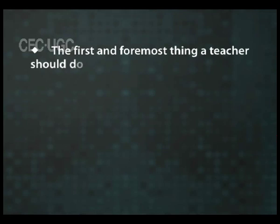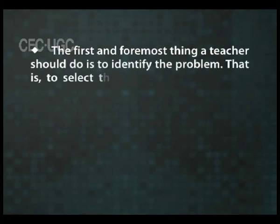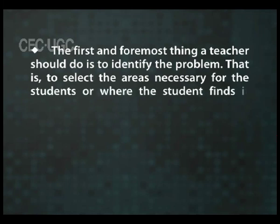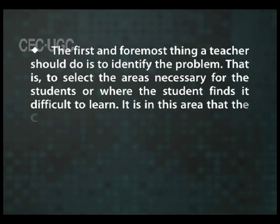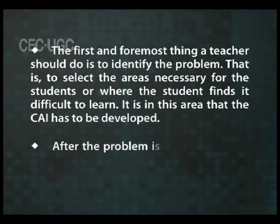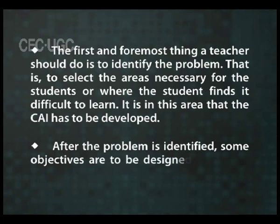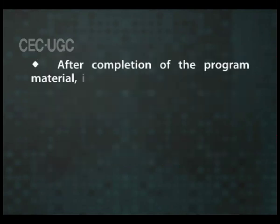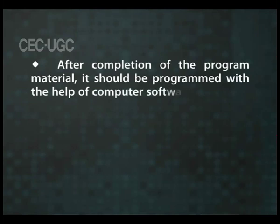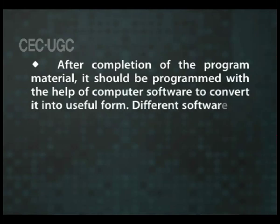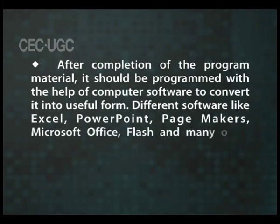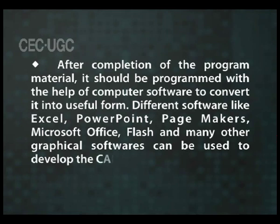Before developing a CAI, the teachers will have to do the following. The first and foremost thing a teacher should do is to identify the problem — that is, to select the areas where the students find it difficult to learn. It is in this area that the CAI has to be developed. After the problem is identified, some objectives are to be designed related to the problem. After completion of the program material, it should be programmed with the help of computer software to convert it into useful form. Different softwares like Excel, PowerPoint, Page Makers, Microsoft Office, Flash, and many other graphical softwares can be used to develop this CAI.